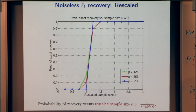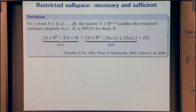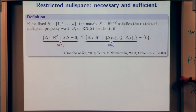Donoho and Candès-Tao looked at plots like this, which would motivate you to try to analyze and actually prove that this is happening. This is related to something Ben spoke about, but in this simple noiseless case, there's a very simple necessary and sufficient condition that's very geometric, with nice connections to results from high-dimensional geometry from the 60s and 70s.